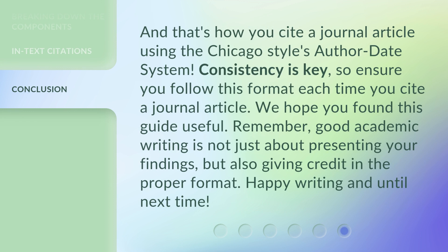And that's how you cite a journal article using the Chicago Style Author-Date System. Consistency is key, so ensure you follow this format each time you cite a journal article. We hope you found this guide useful. Remember, good academic writing is not just about presenting your findings, but also giving credit in the proper format. Happy writing, and until next time.